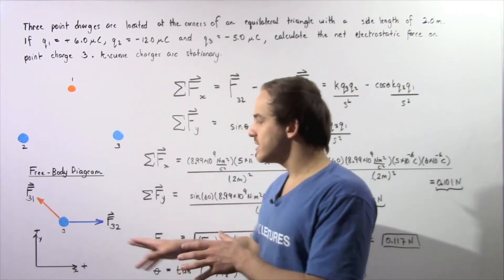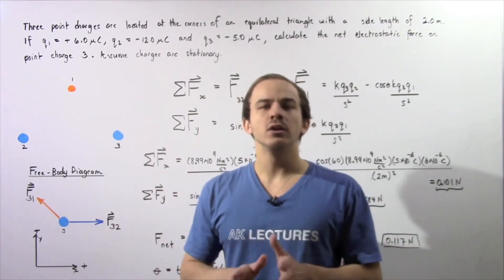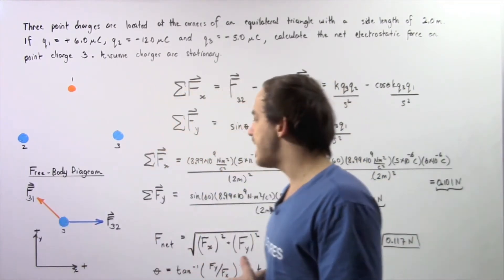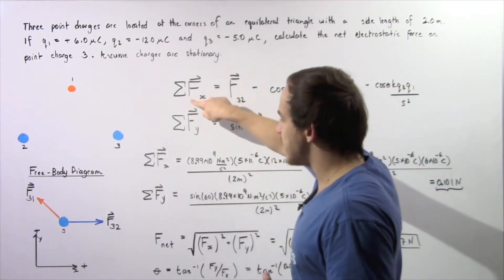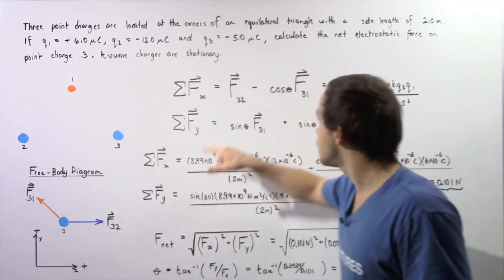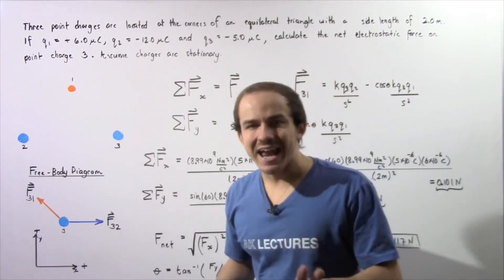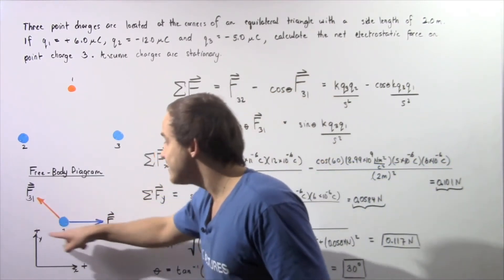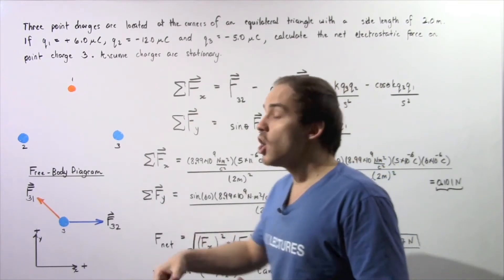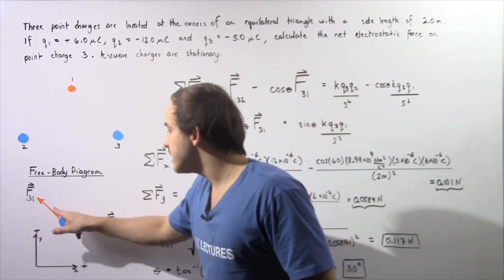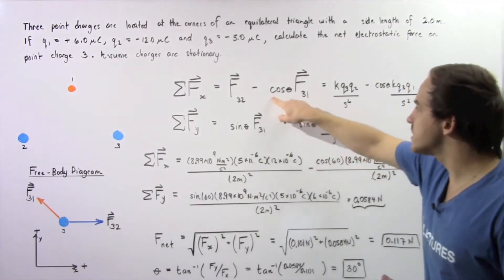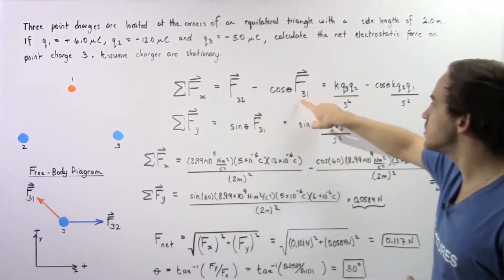Let's examine all the forces acting on this point charge that point along the x-axis. Going to the right along the x-axis is positive and going to the left will be negative. The sum of all the forces acting on point charge three along the x-axis equals the positive force F32, minus the x-component of F31, which is cosine of angle theta multiplied by force F31.